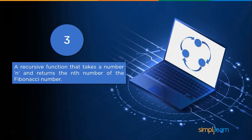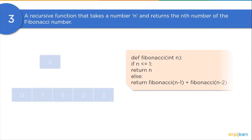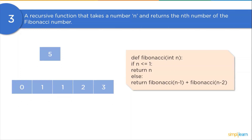Then we will move on to our next question. We will discuss a recursive function to find the nth Fibonacci number. We will start with creating a function Fibonacci. In this function's definition, we will first check if the given number is less than or equal to 1, then return that number. Else, we will return the sum of the recursive function Fibonacci with n-1 as an argument and the recursive function Fibonacci with n-2 as an argument.